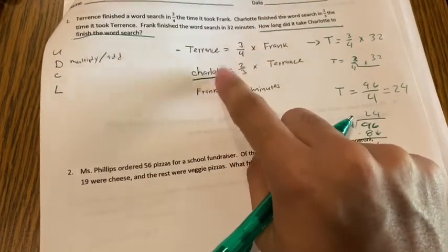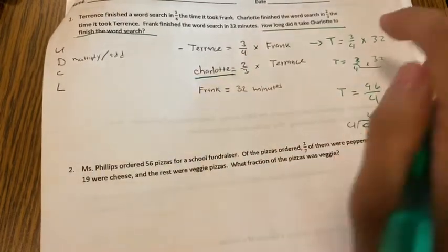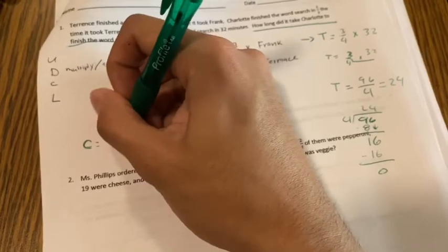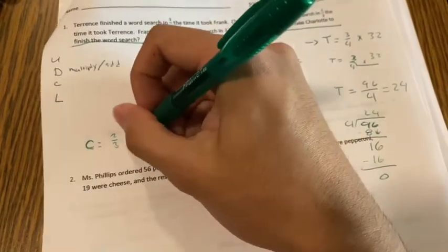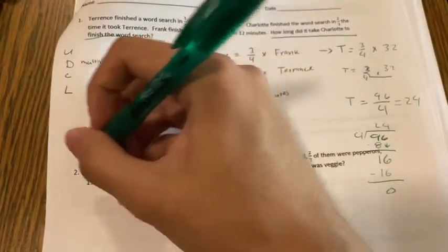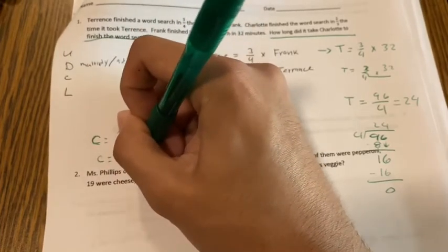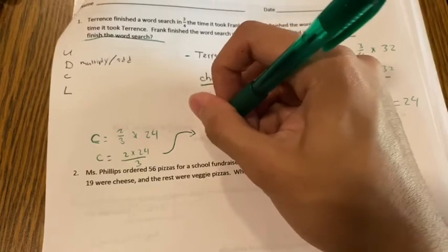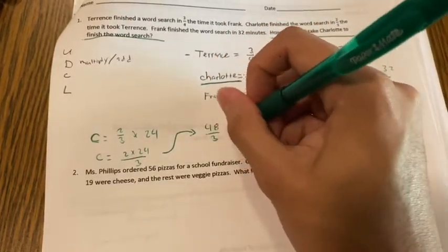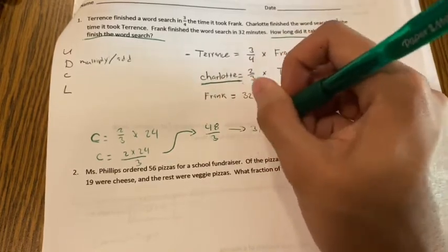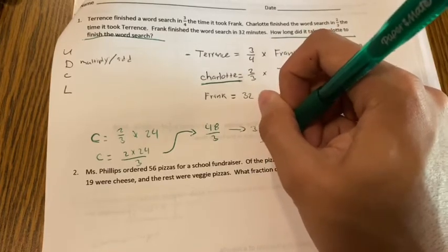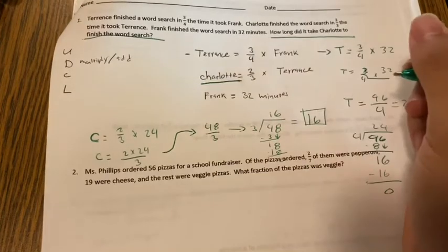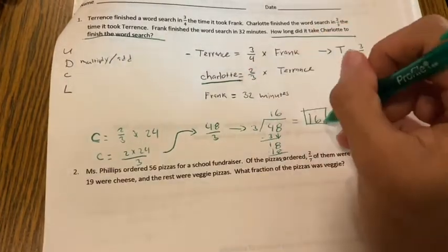And now take a look at here. Now I can solve for Charlotte because it took Charlotte 2 thirds the time it took Terrence, which means if I want to find Charlotte, I'm going to do it here and put C for Charlotte. It took her 2 thirds times Terrence, which took him 24. Now I know that number. So, my equation is going to look like 2 times 24 divided by 3. 2 times 24, that is 48. So, I am dividing 48 divided by 3. So, let's see what our answer is. 3 goes into 4 one time. I dropped down my 8. 3 goes into 18 six times. So, my answer is 16. So, it took Charlotte how long? It took Charlotte 16 minutes.